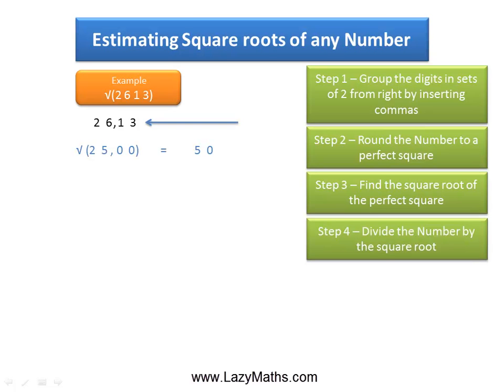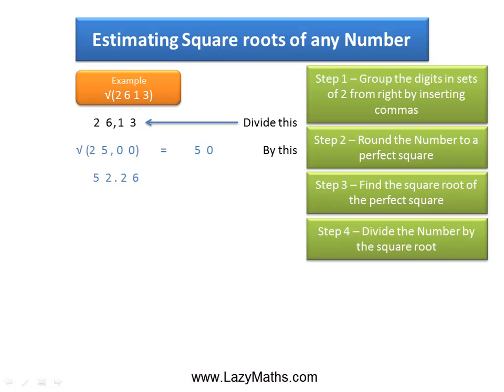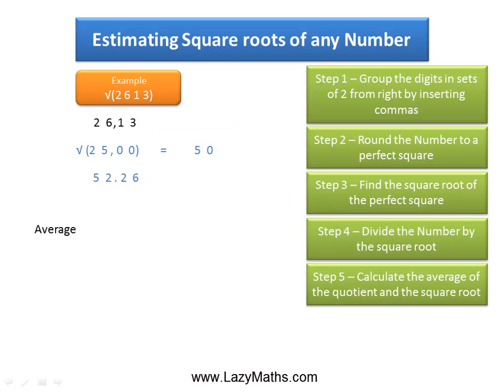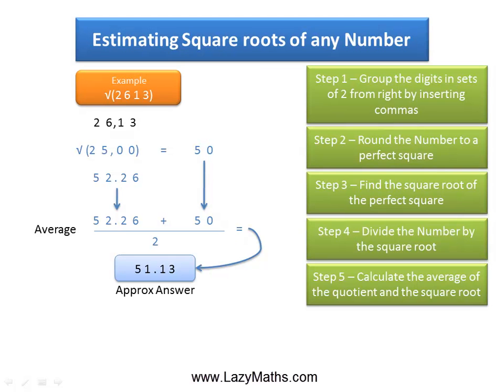The next step is to divide 2613 by 50, and we get 52.26. Then we simply take the average of 52.26 and 50 to get 51.13. This becomes our approximate answer for the square root of 2613 — approximately equal to 51.13.